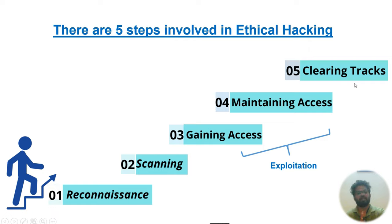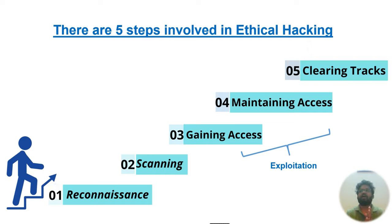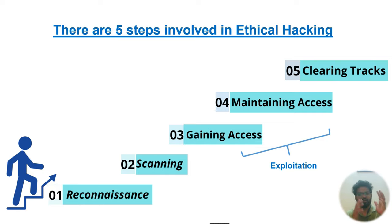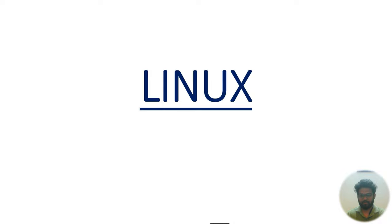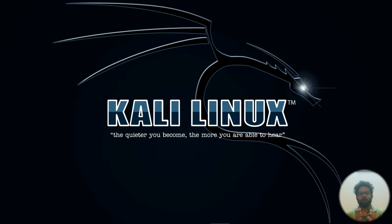Exploiting a vulnerability means taking advantage of it. In ethical hacking you find and report vulnerabilities; exploitation is part of penetration testing, which we'll cover in upcoming slides. Now, how is ethical hacking actually done? We use tools. Just like doctors use X-rays, MRI scans, or bone-check hammers — each specialist has their tools — in ethical hacking we also use specific tools.